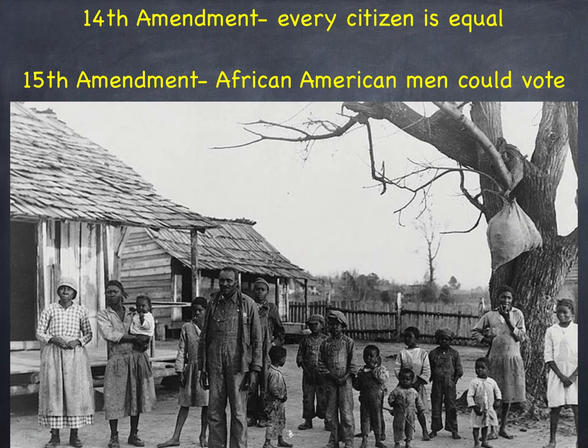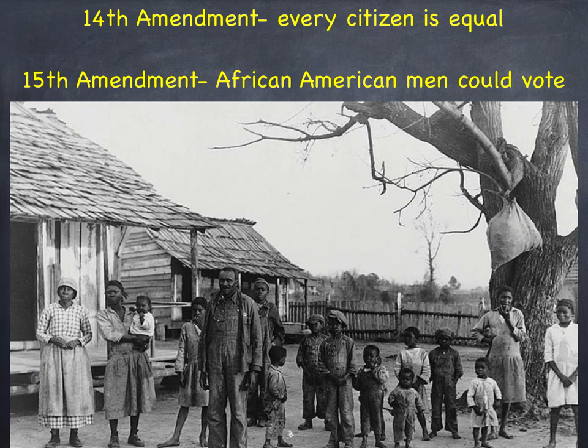Also part of the Reconstruction Amendments was the 15th Amendment, which said that African-American men could vote — no women yet, but African-American men could vote. So to recap: the 13th Amendment ended slavery; the 14th Amendment said every citizen is equal — 14 is an even number, it can be divided equally, which helps remember it; and the 15th Amendment gave African-American men the right to vote. Just because these are part of the U.S. Constitution and the Southern states were forced to vote yes on them doesn't mean that they wanted these — they hated these.